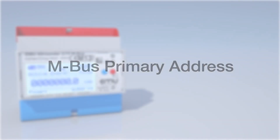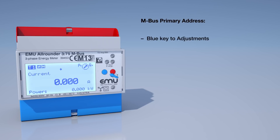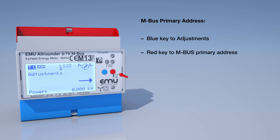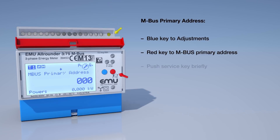MBUS Primary Address. To configure the MBUS Primary Address, press the blue button several times until you see the adjustments menu. Now press the red button several times until you see the MBUS Primary Address menu. Now briefly press the service button.